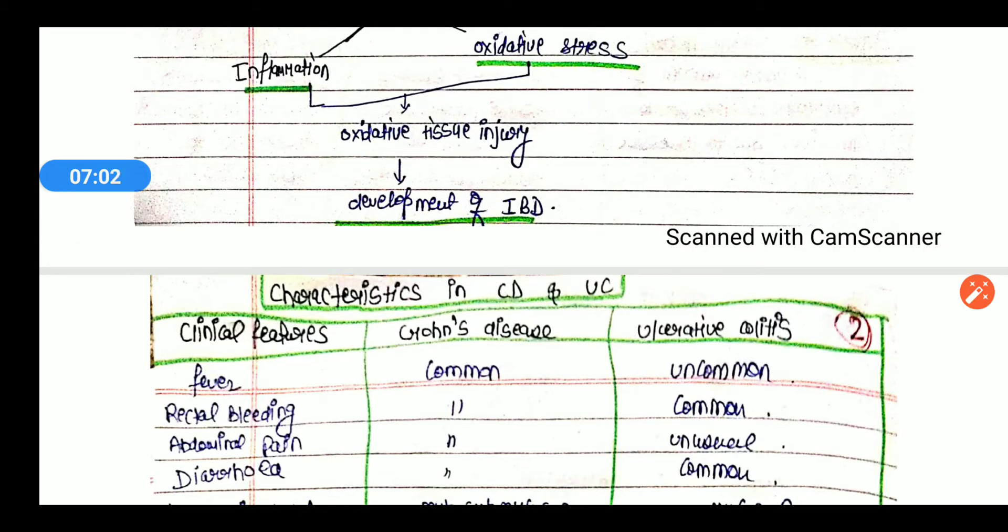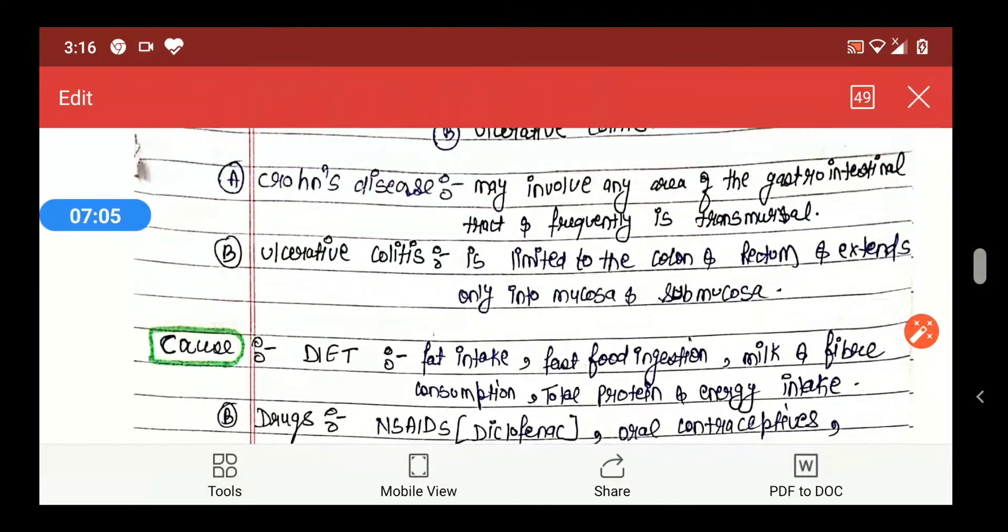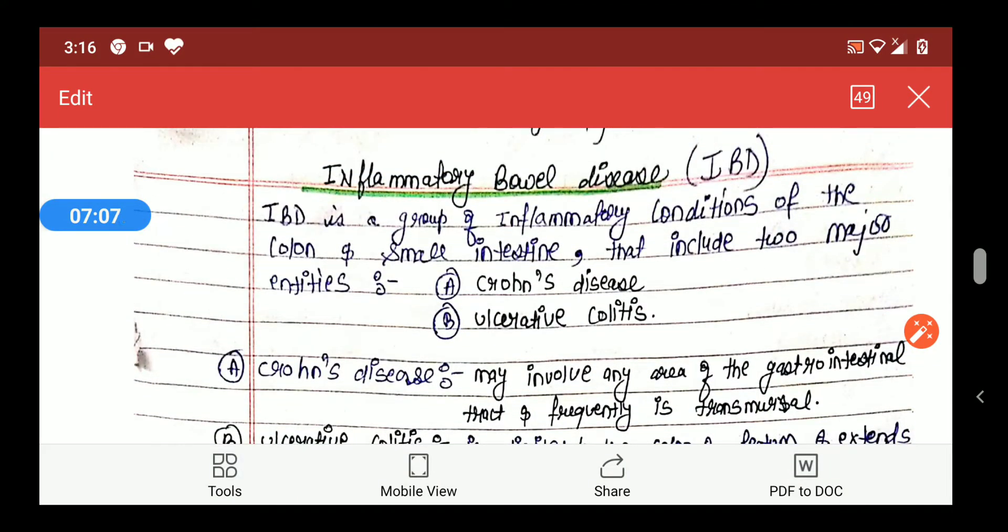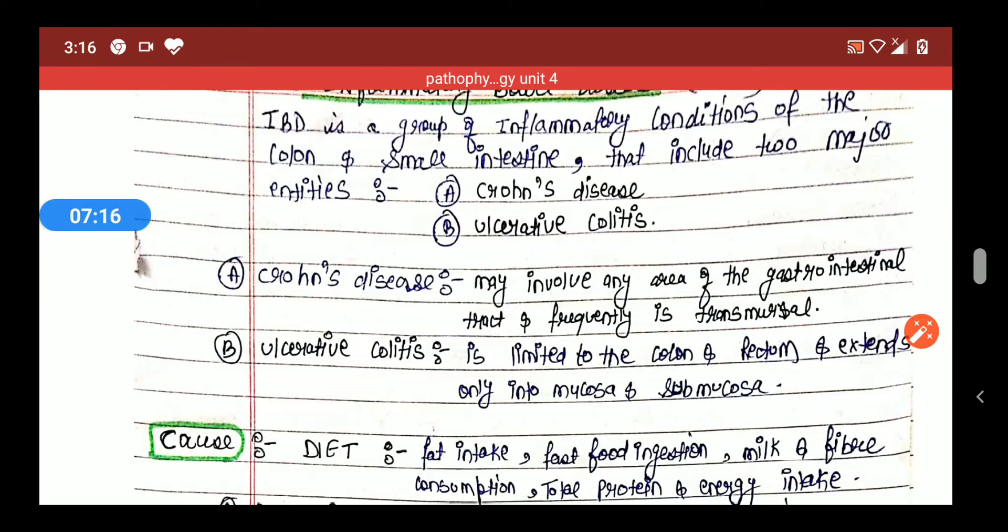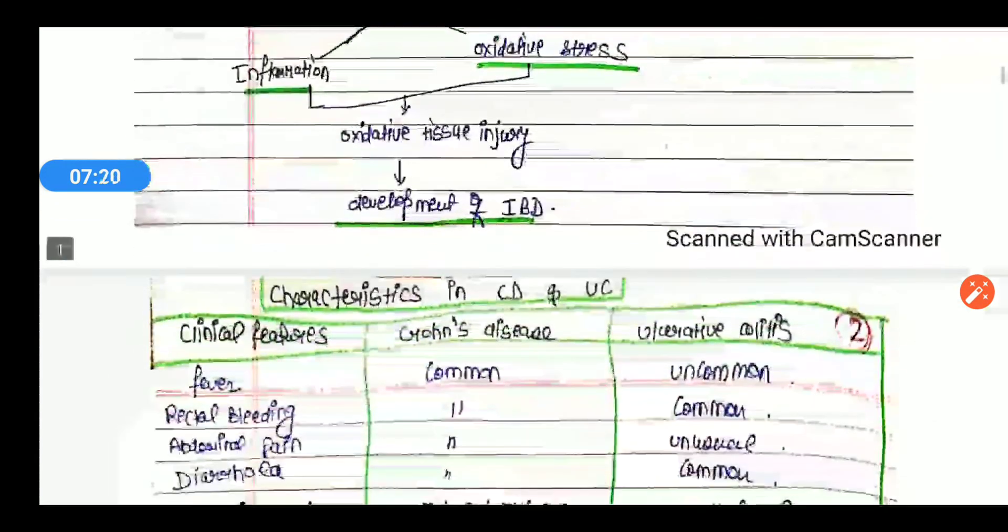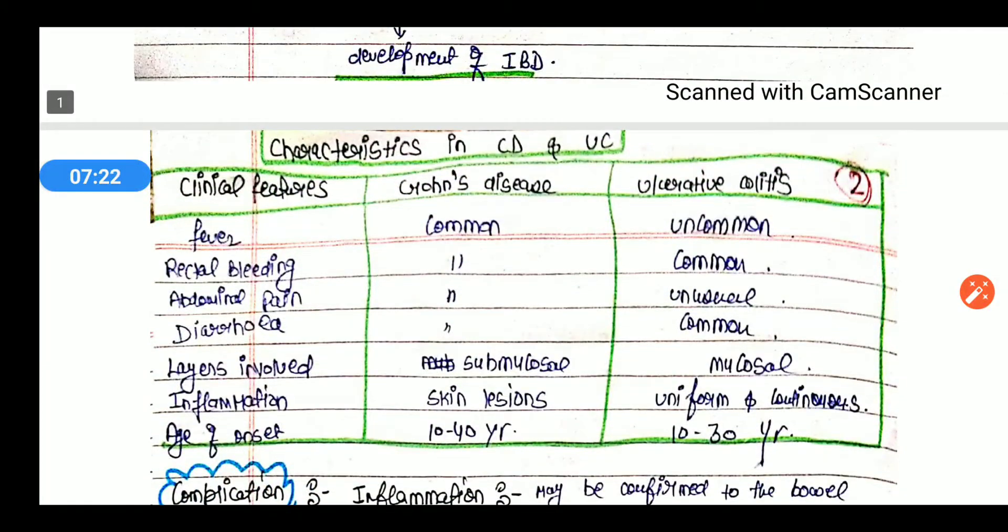Next point: now we have two conditions in this - one is Crohn's disease and ulcerative colitis. Now the major difference is the main area where inflammation is caused. Now we have another factor which you can differentiate between Crohn's disease and ulcerative colitis. This portion you can see, like fever in Crohn's disease and ulcerative colitis is uncommon. These are the normal points which you can see yourself.